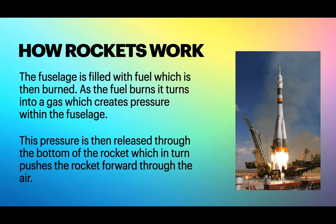The fuselage is filled with fuel, which is lit on fire and burned. As the fuel burns, it turns from a liquid or a solid, depending on the type of fuel they use, into a gas. As this gas builds up inside the rocket, it creates a massive amount of pressure in the cylindrical fuselage. At a certain point, this pressure is released through the bottom of the rocket, pushing it forward through the sky. This is known as jet propulsion.